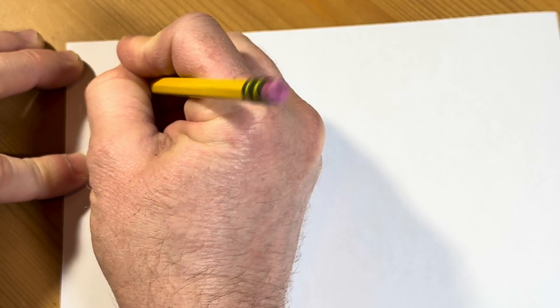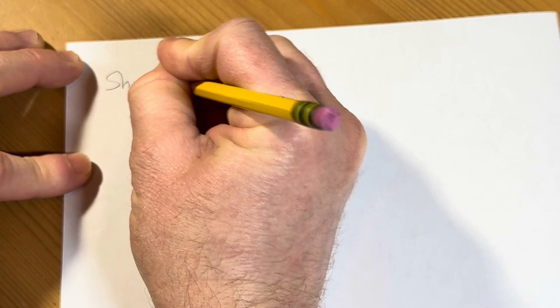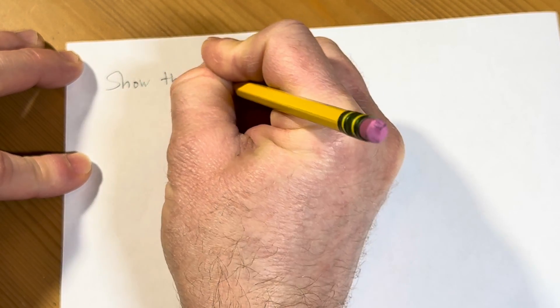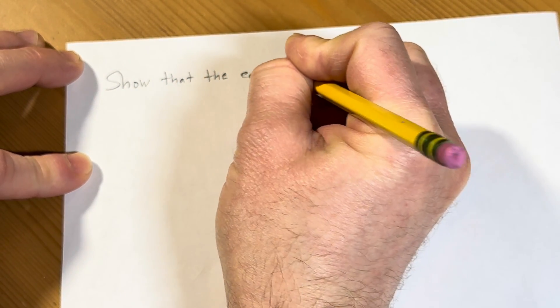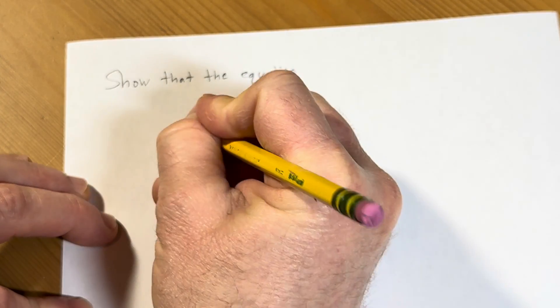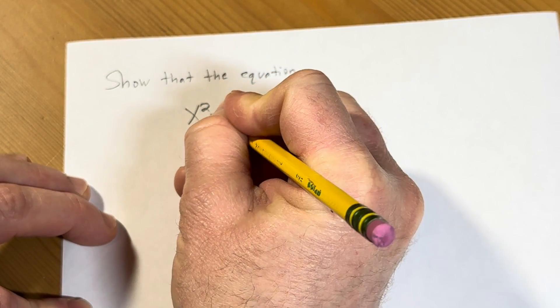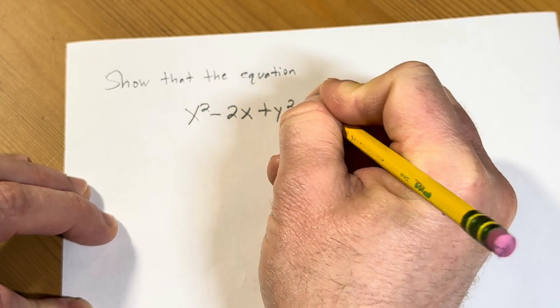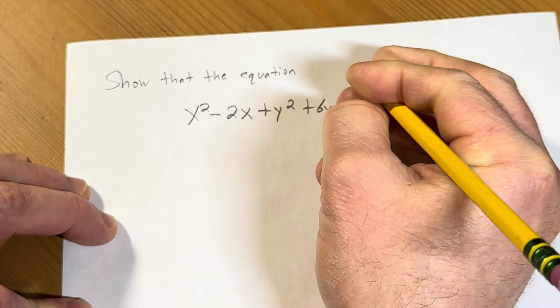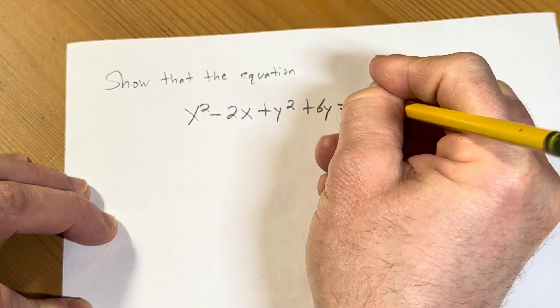So the question is to show that the equation, and here's the equation, it's x squared minus 2x plus y squared plus 6y equals negative 6.